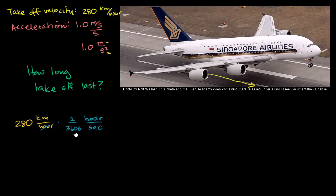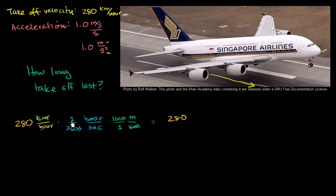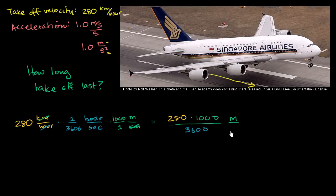I want to do all the math at once, so let's also do the conversion from kilometers to meters. We have kilometers in the numerator, so we want kilometers in the denominator to cancel out, and meters in the numerator. There are 1,000 meters for every one kilometer. When you multiply this out, the kilometers cancel, and you're left with 280 times 1,000, all over 3,600. The only unit remaining is meters per second.